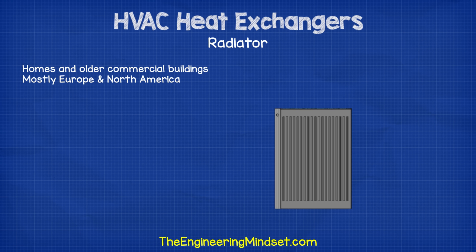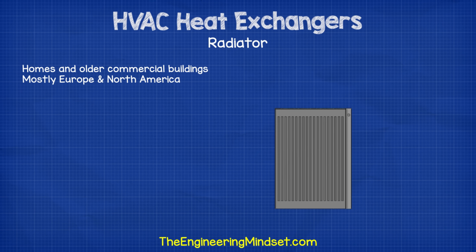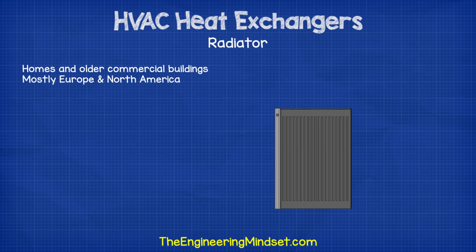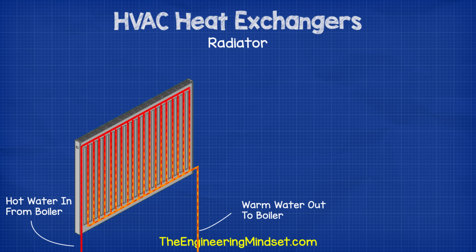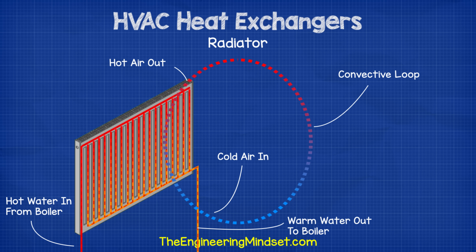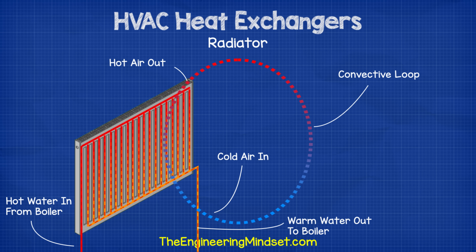Radiators are very common, especially across Europe and North America in homes and older commercial buildings. They are mounted to walls, typically under a window, to provide space heating. They are connected to a hot water pipe fed from a boiler. The internal area of the radiator is larger than the pipe, slowing water velocity and allowing more time for heat transfer. The heat conducts to the metal walls, heats the air on the outside, causing it to rise, and cold air moves in to replace it — this moving air is convection heat transfer.